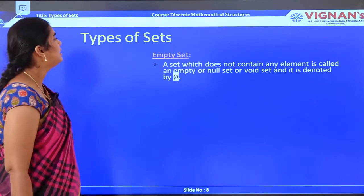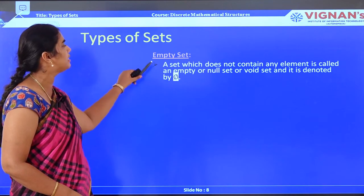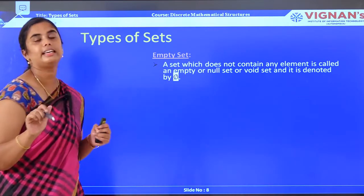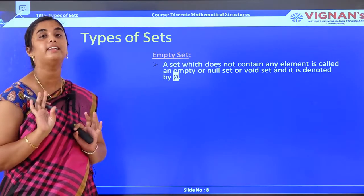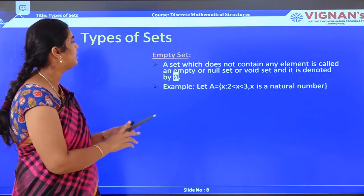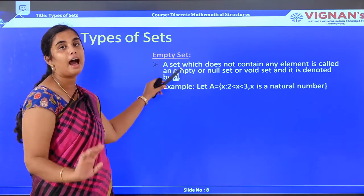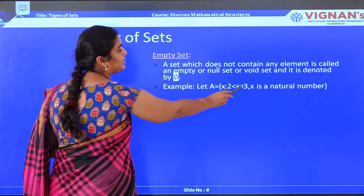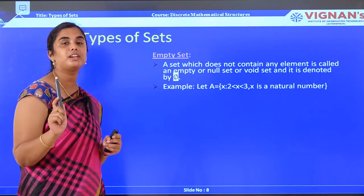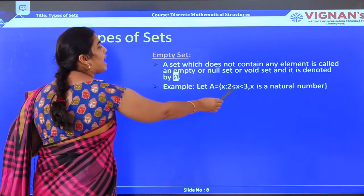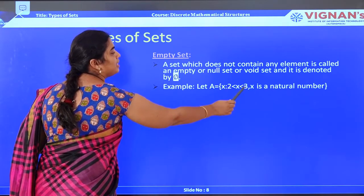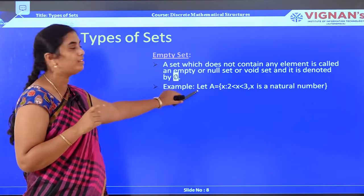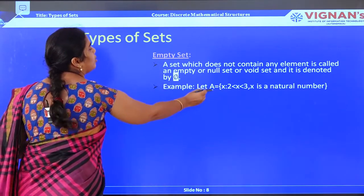First comes the empty set. A set which does not contain any element is called an empty set, null set, or void set. For example, A = {x : 2 < x < 3, x is a natural number}. Since natural numbers do not exist as fractions, and there is no natural number between 2 and 3, the set has no elements — so A is a null set.